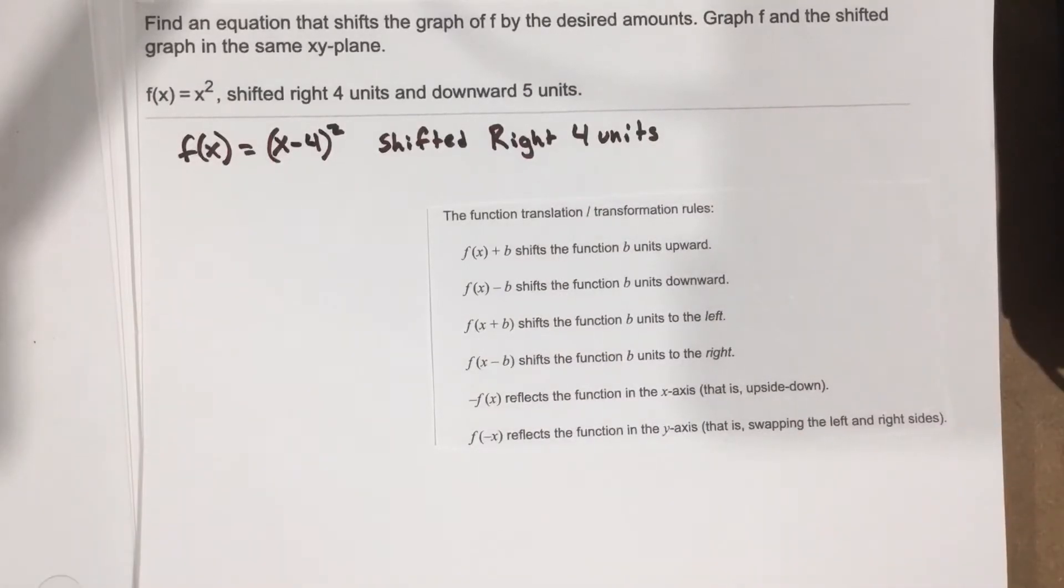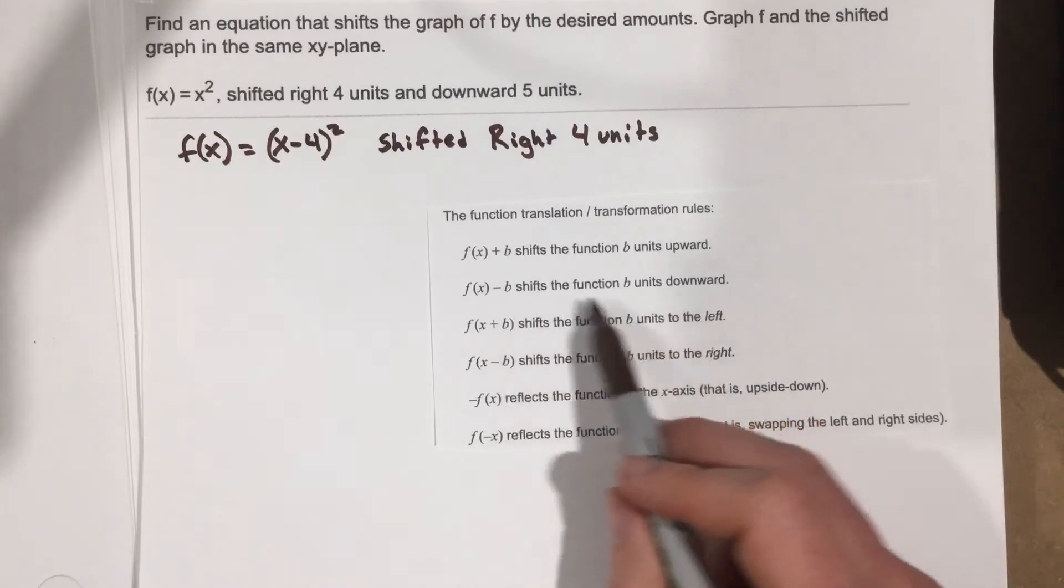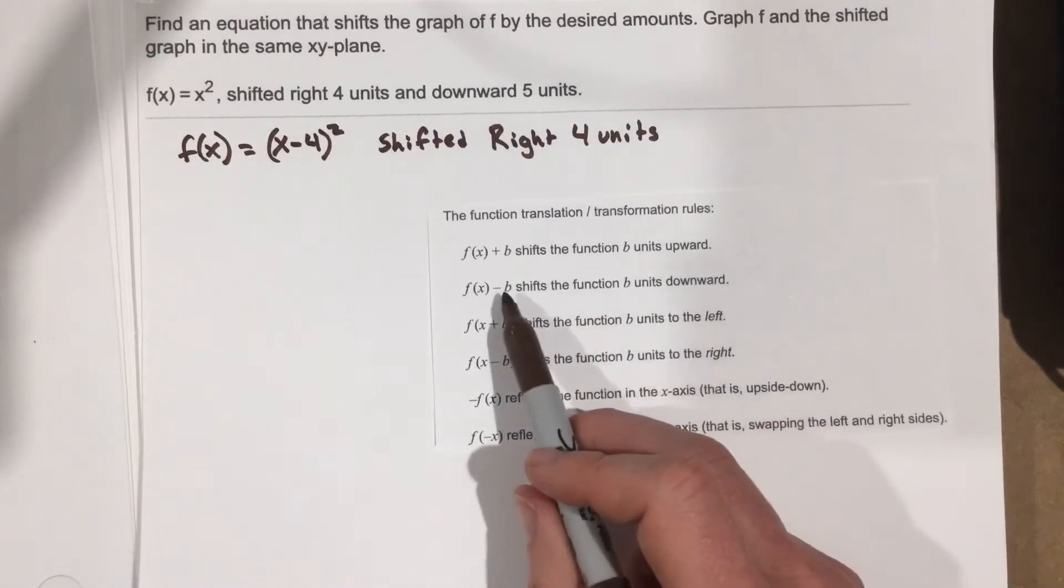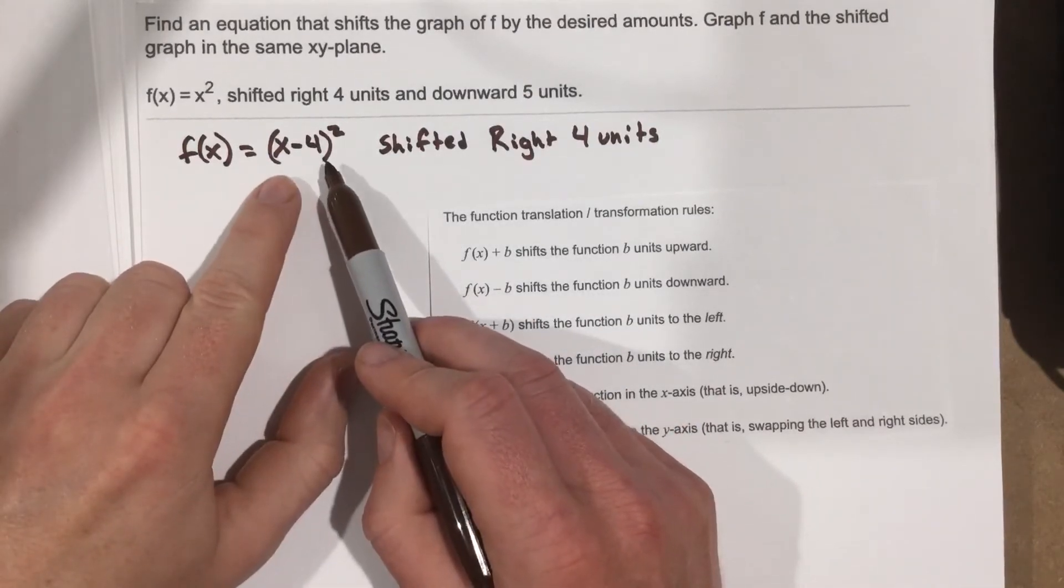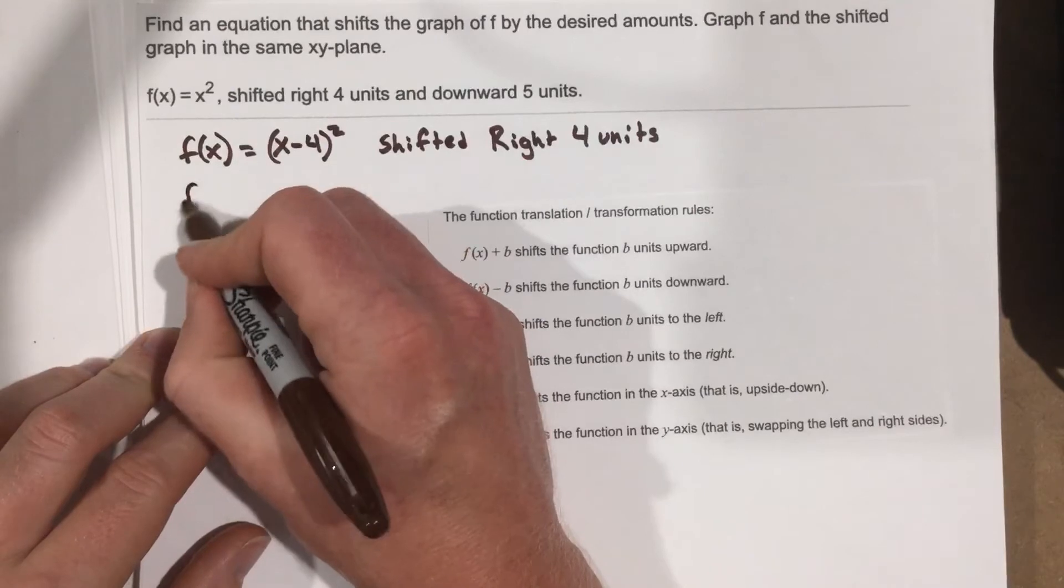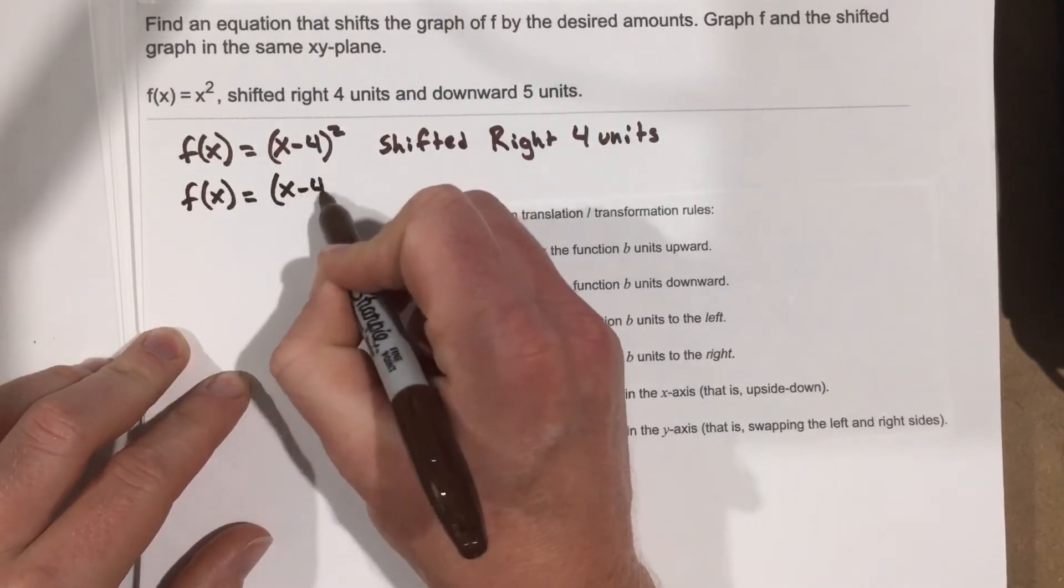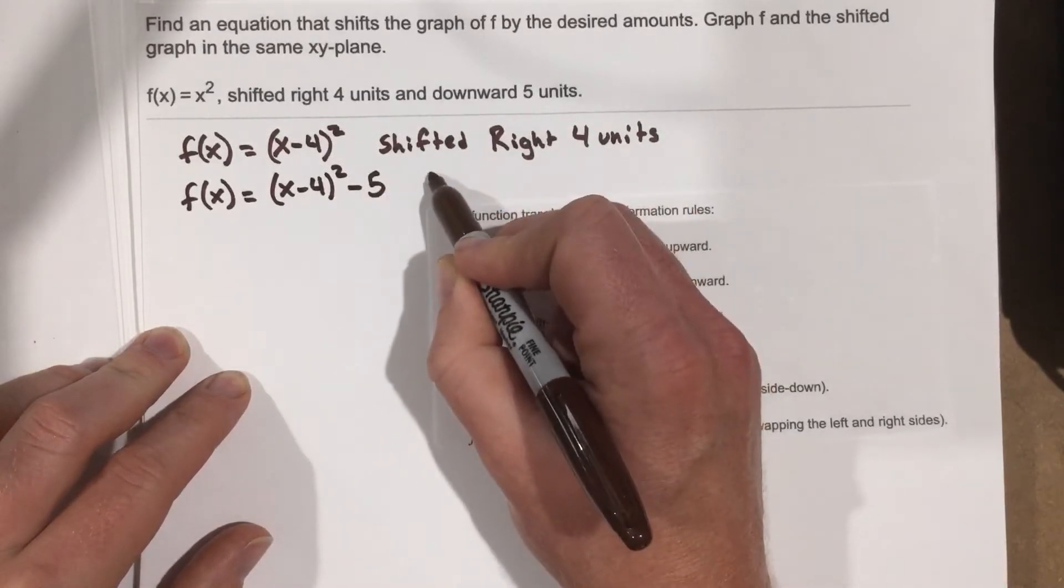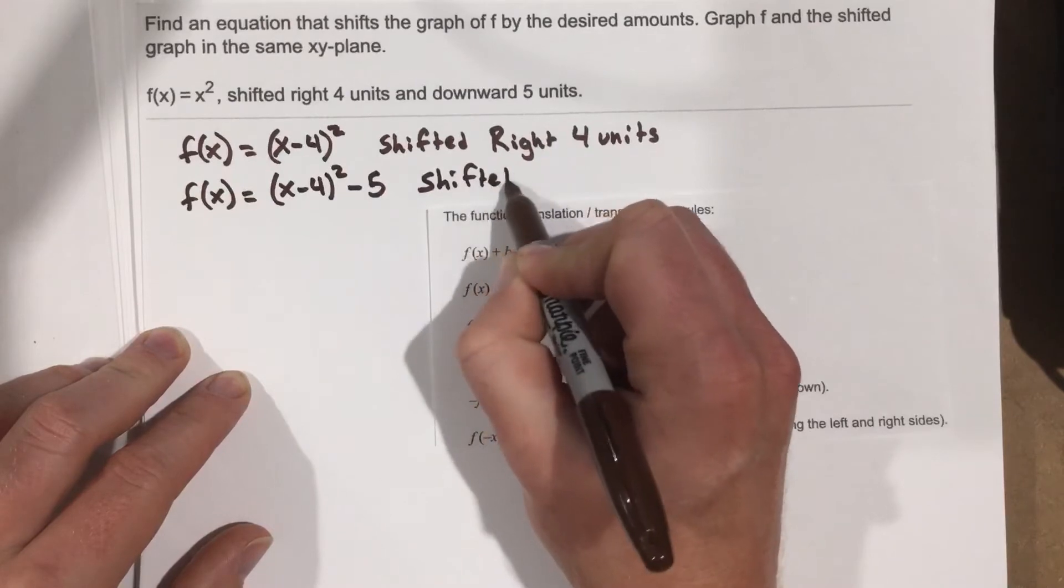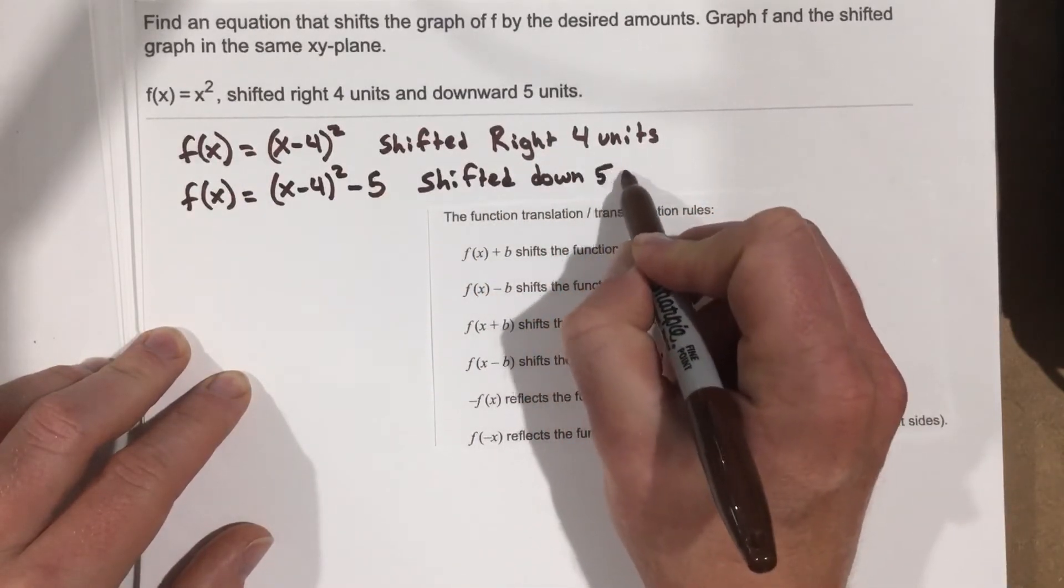Okay, so we did the shifting to the right 4 units. Now I want to shift it downwards 5 units. So it says to shift the function downwards, I need to subtract from the actual function itself. So from this function, I need to subtract 5. So f of x equals x minus 4 squared minus 5. This is now shifted down 5 units.